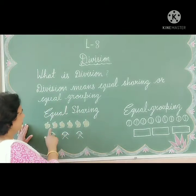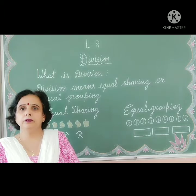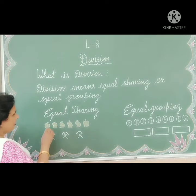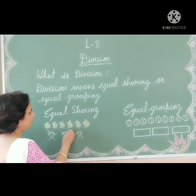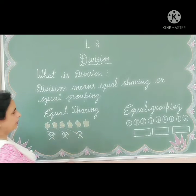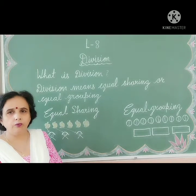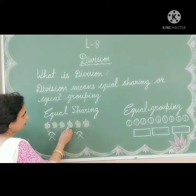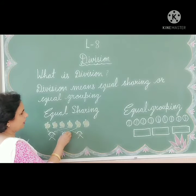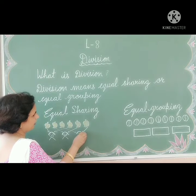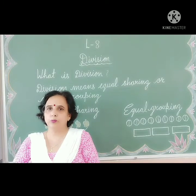For example, equal share: we have six mangoes. Now we are sharing them among three children. First mango to first child, second mango to second child, and third mango to third child. Three mangoes are left, so now we distribute them again. Fourth mango to first child, fifth mango to second child, and sixth mango to third child. Now all children have two mangoes each.